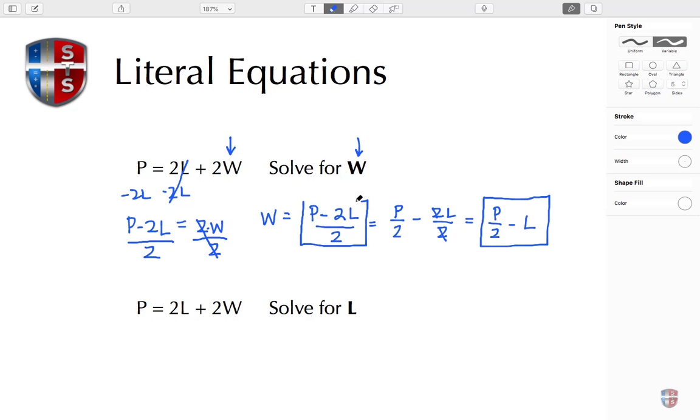Let's move on to the second one. In this one we're going to solve for L. We're going to keep L in position, so the first thing we're going to do is subtract 2W from both sides. Doing so, these 2Ws cancel, so I have P minus 2W equals 2L.